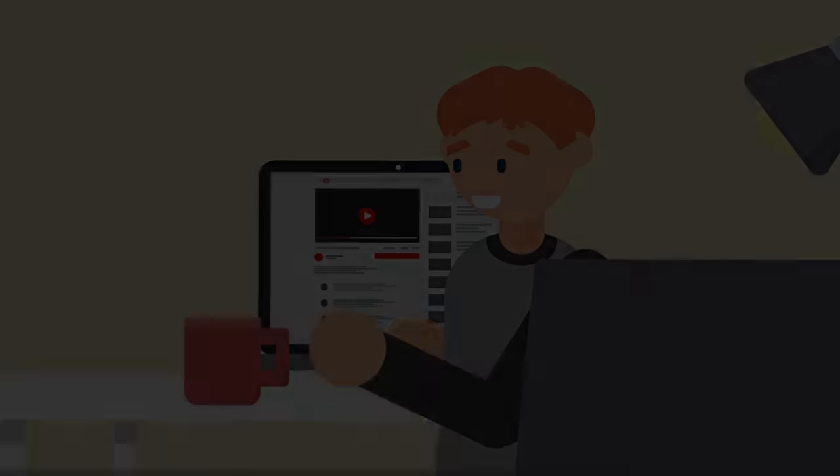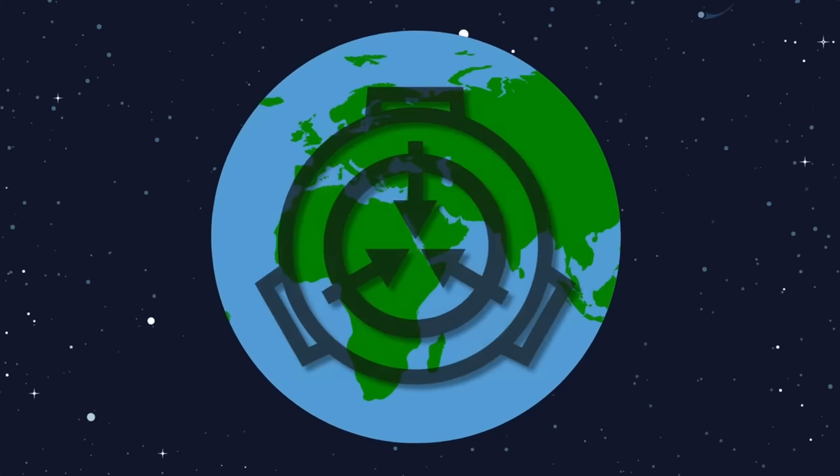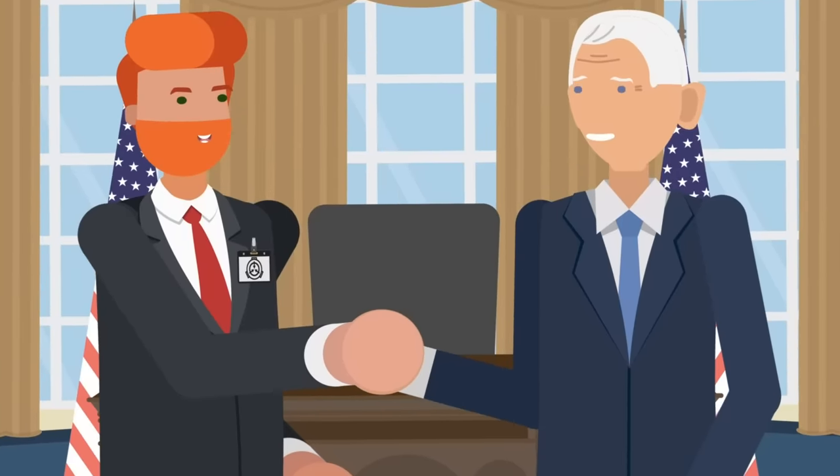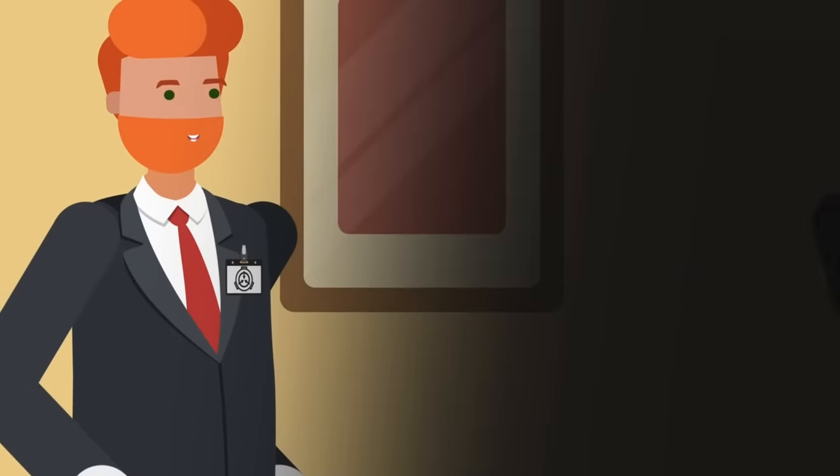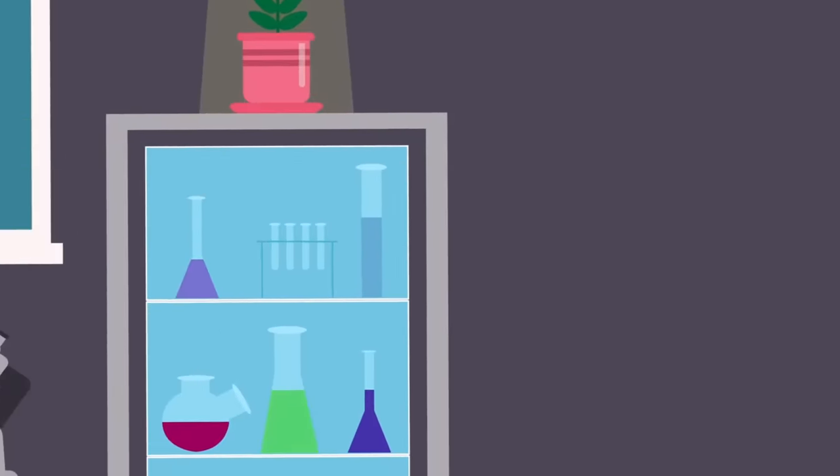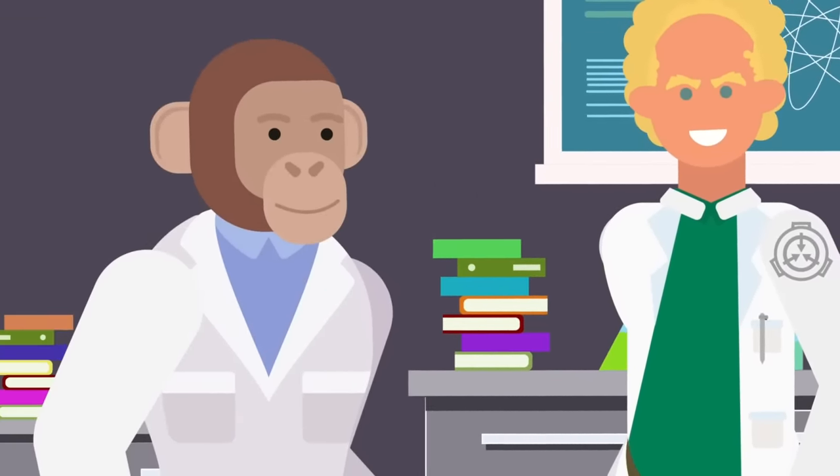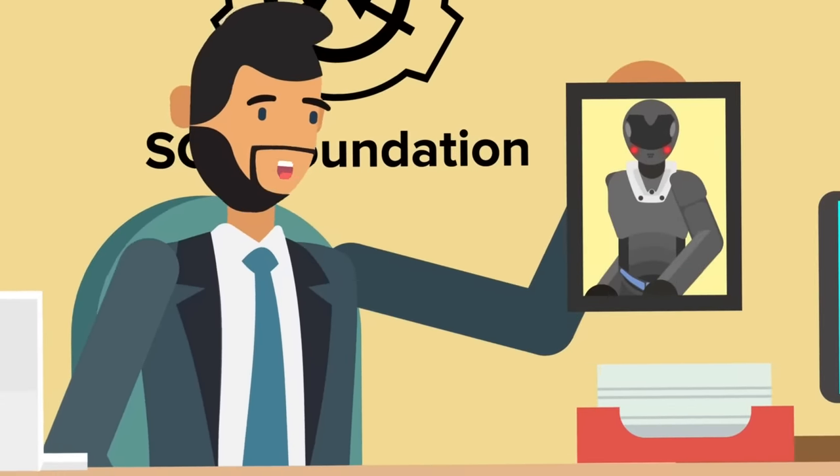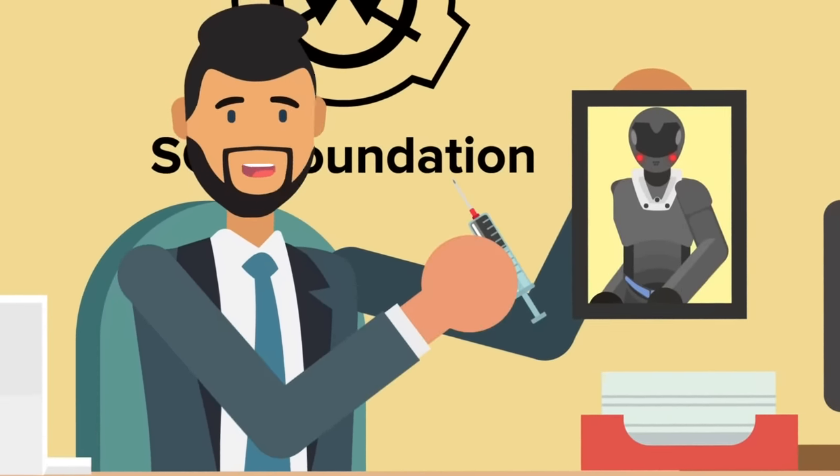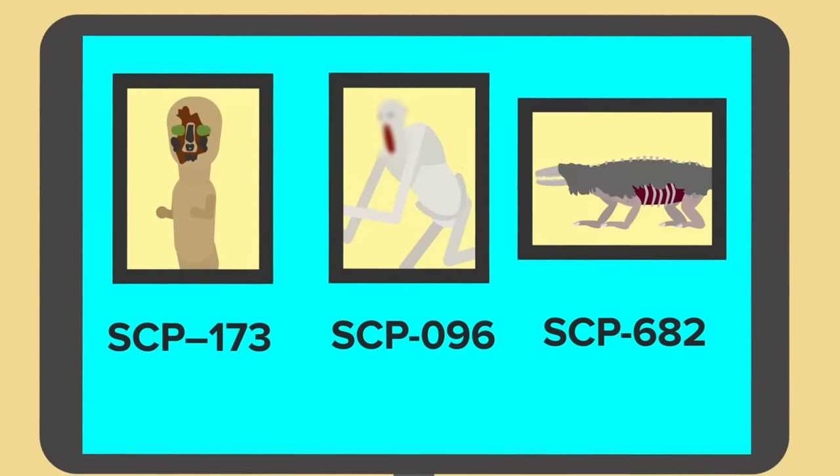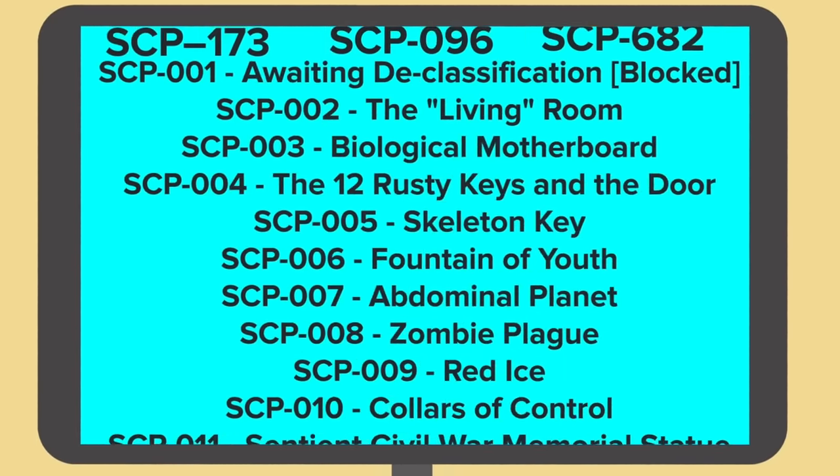The SCP Foundation is the most powerful organization on planet Earth. Thanks to their cooperation with all world governments as well as private organizations, front businesses, and wealthy benefactors, they have truly unlimited funds. Their ranks include the best and brightest humanity has to offer, and even some minds outside the human race. They have access to advanced and anomalous technology, from powerful weapons to memory-wiping amnestics, to state-of-the-art equipment that even Elon Musk could only dream of.